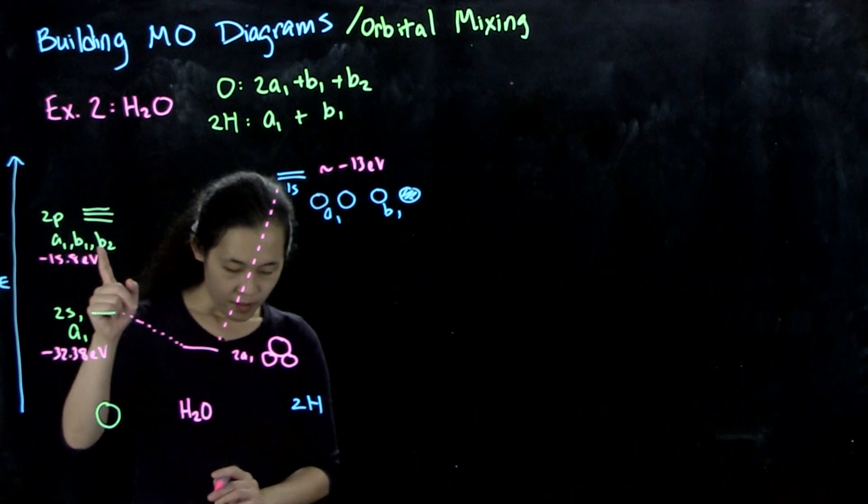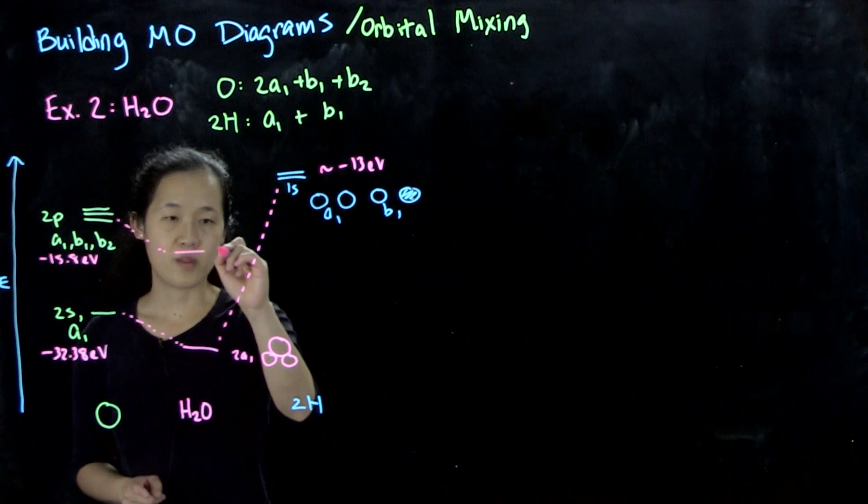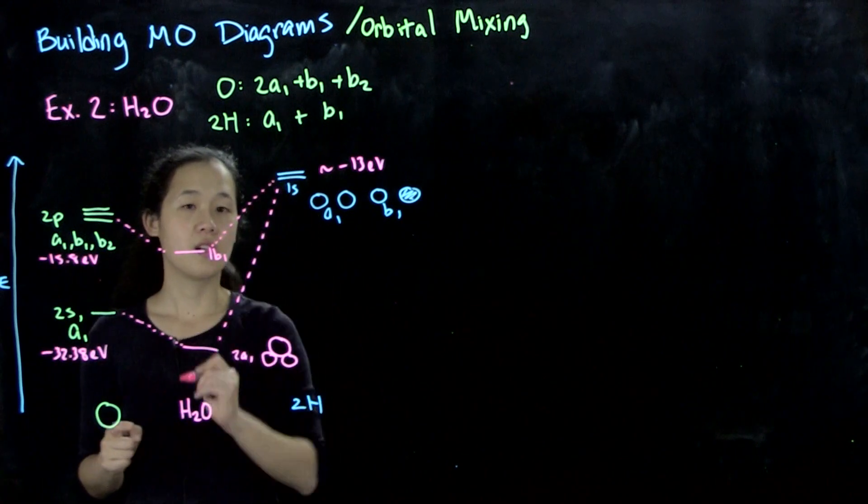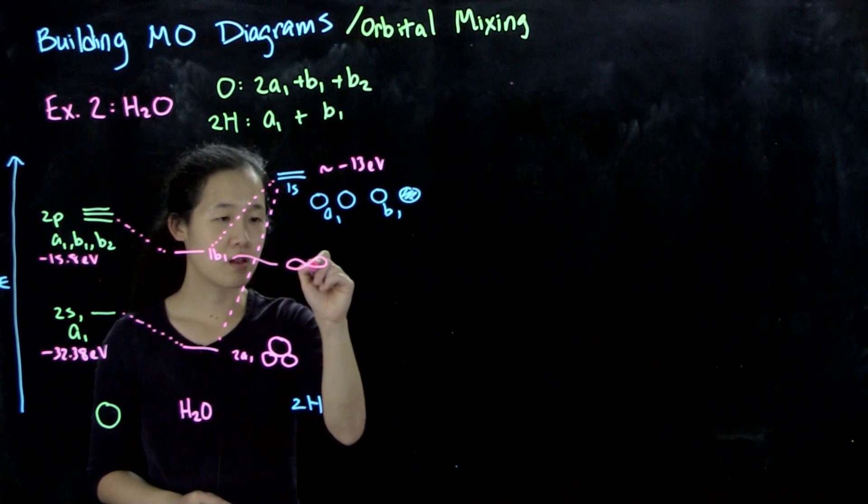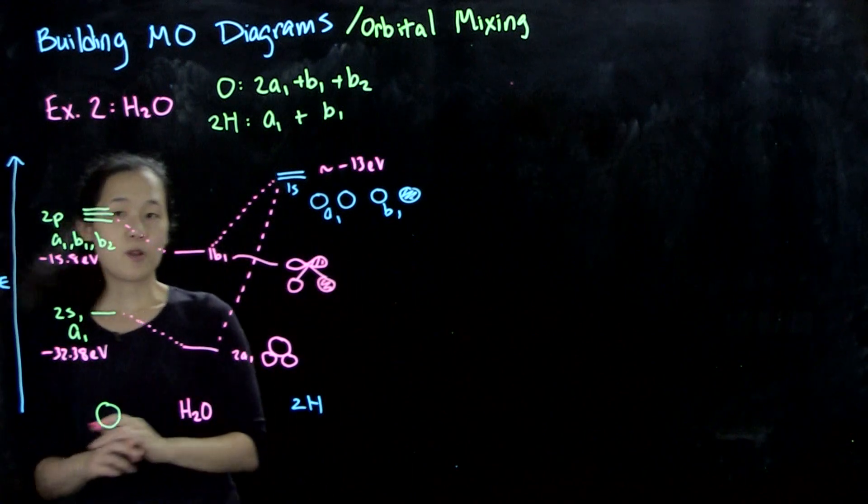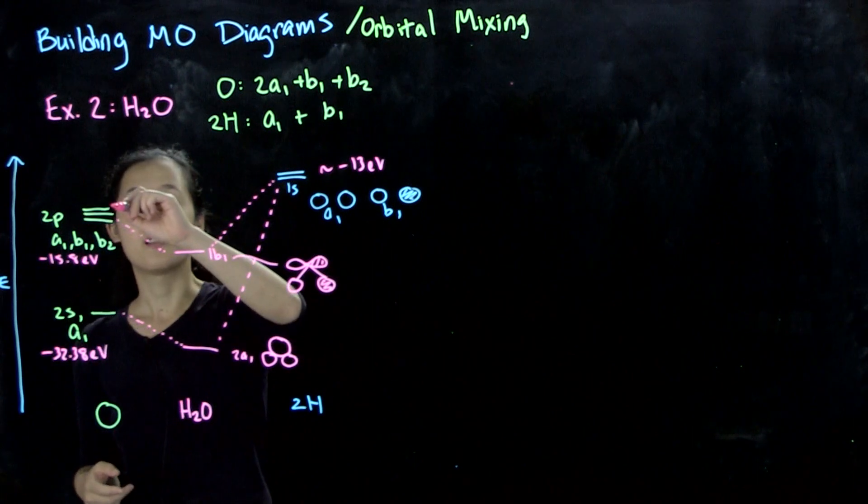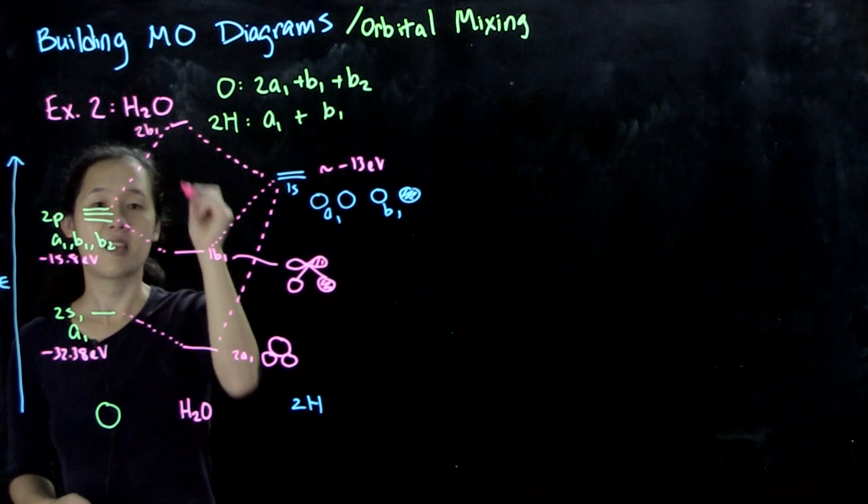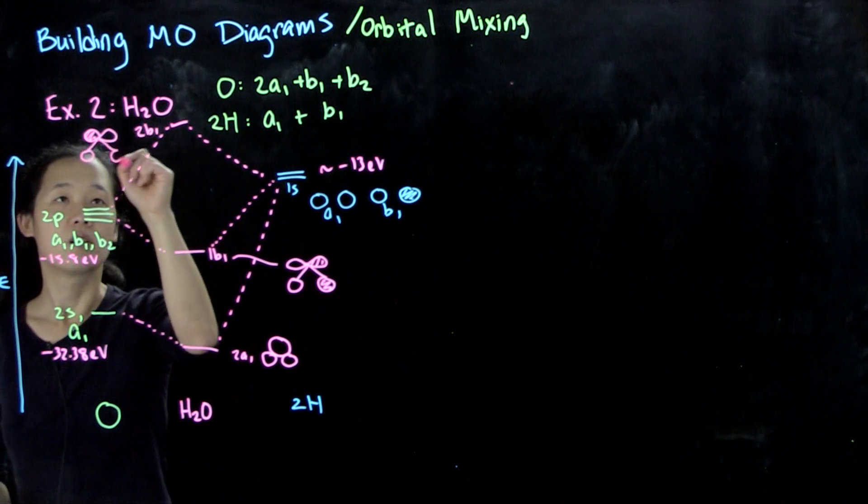Let's do some easy ones first. The b1 will also be stabilized. Here will be 1b1. This goes down. Here's our bonding combination between the px and this b1 SALC. Since we only have two b1 symmetry orbitals, we have to have just two coming out. We have bonding, so the other must be anti-bonding. This will be 2b1, the anti-bonding combination, which is the out-of-phase combination.